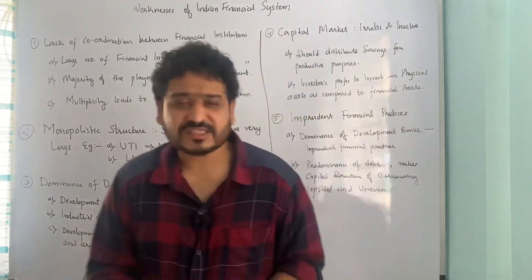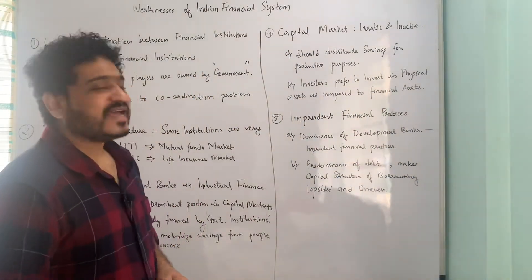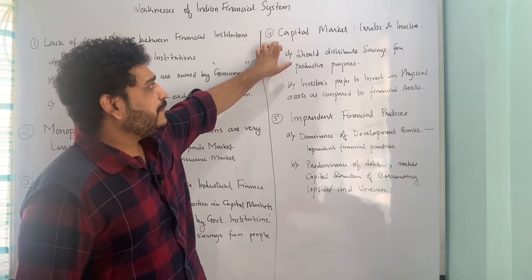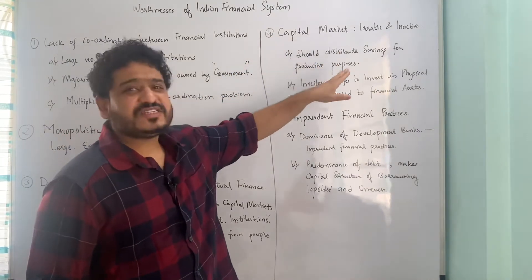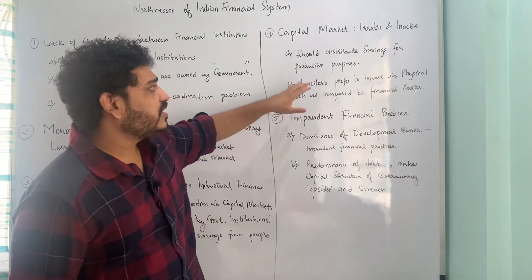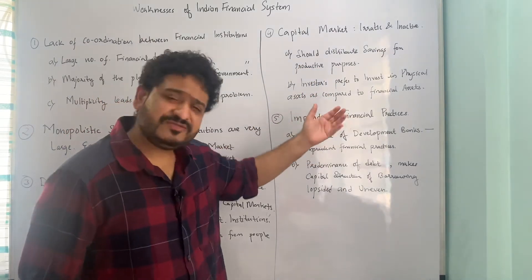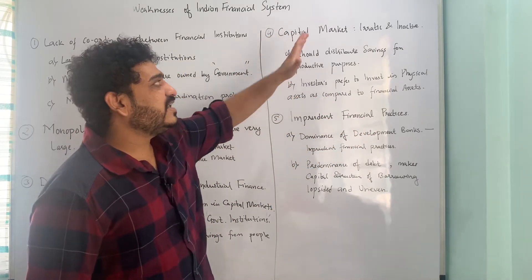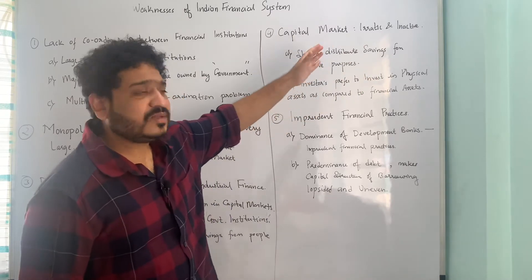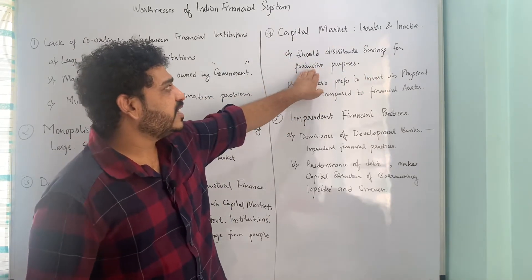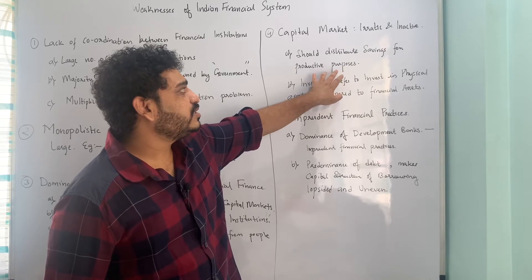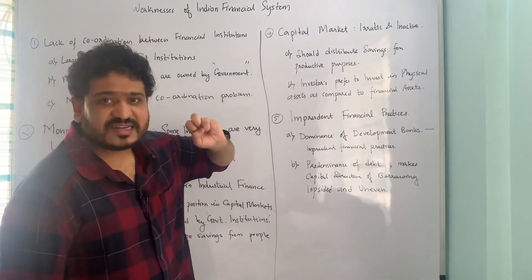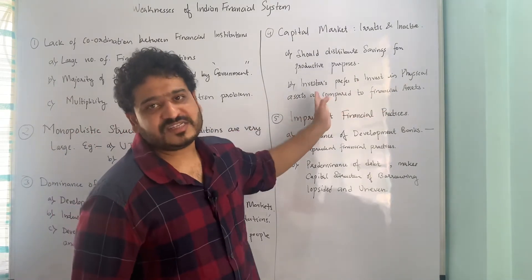The fourth point is that the capital market is erratic and inactive, meaning the capital market is not distributing savings for productive activities. Furthermore, investors prefer to invest in physical assets rather than financial assets. To improve this, savings should be distributed for productive activities and investors should be attracted to invest in financial assets rather than physical assets.